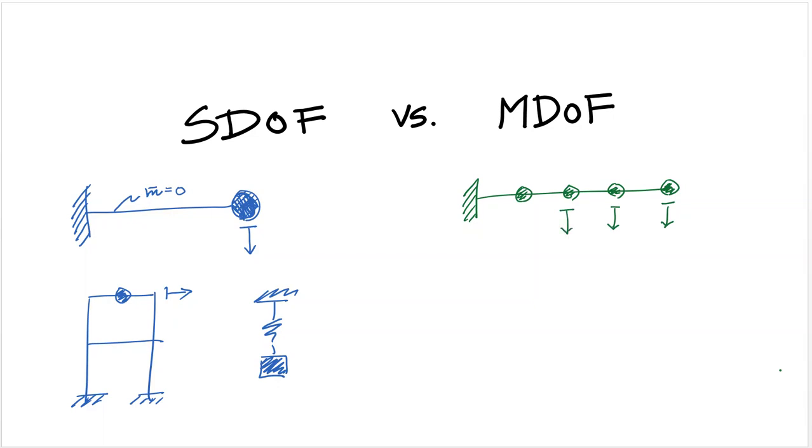if you just know the response of one coordinate, you cannot determine the response of the whole system because the dynamics are affected by the response of all the systems interconnected. Same thing with something like a frame like this, with multiple floors, with multiple masses.